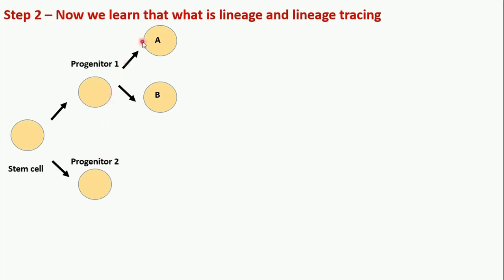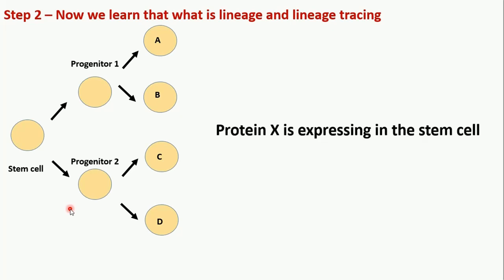Progenitor 1 gives rise to differentiated cell type A and cell type B; progenitor 2 gives rise to differentiated cell type C and cell type D. We want to trace the whole pathway, and to do lineage tracing we are going to use a protein that is specifically expressed in our stem cell — I'll call it protein X. We will take advantage of the knowledge that protein X is expressed in the stem cell, and with the combination of protein X, Cre recombinase, and loxP sites with a reporter gene, we will analyze the whole lineage.